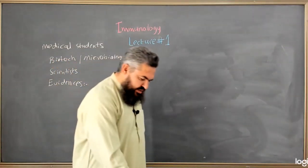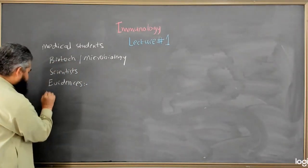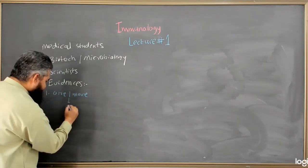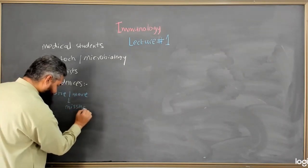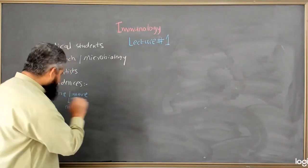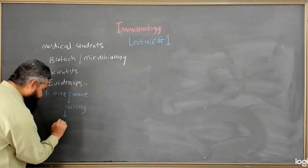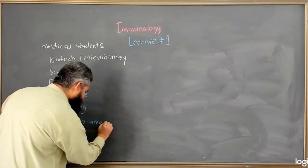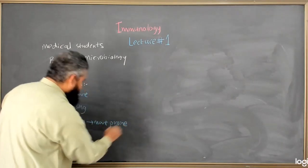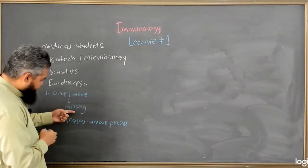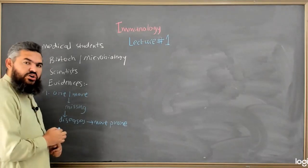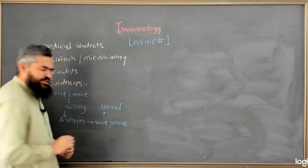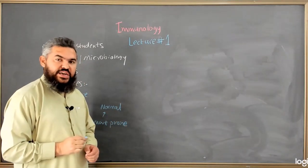The first evidence is that if one or more components of the immune system are missing, those particular individuals or organisms are more prone to diseases as compared to their normal counterparts. This proves that if one or more components of the immune system are missing and making these individuals more prone to diseases, it means that there is an immune system protecting these living organisms from different pathological conditions.